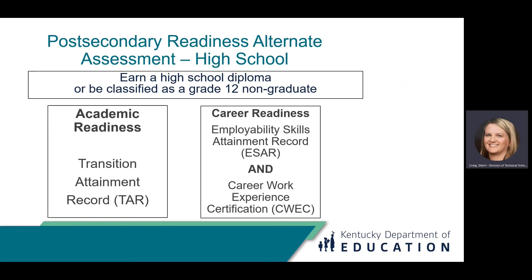There are two ways for students to demonstrate post-secondary readiness within Kentucky's accountability system. Students must earn a high school diploma or be classified as a grade 12 non-graduate and meet the requirements of one type of readiness: academic readiness or career readiness. In alignment with regular assessment, achievement of career readiness is not mandatory. The accountability system allows for meeting the requirements of academic readiness or career readiness. However, school districts must provide students opportunity and access to work toward career readiness, including students participating in the alternate assessment.